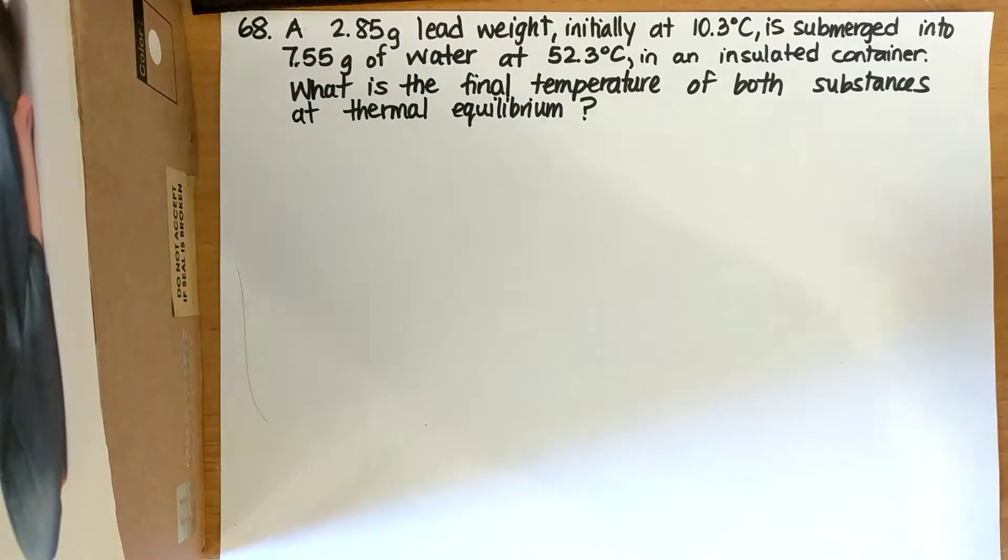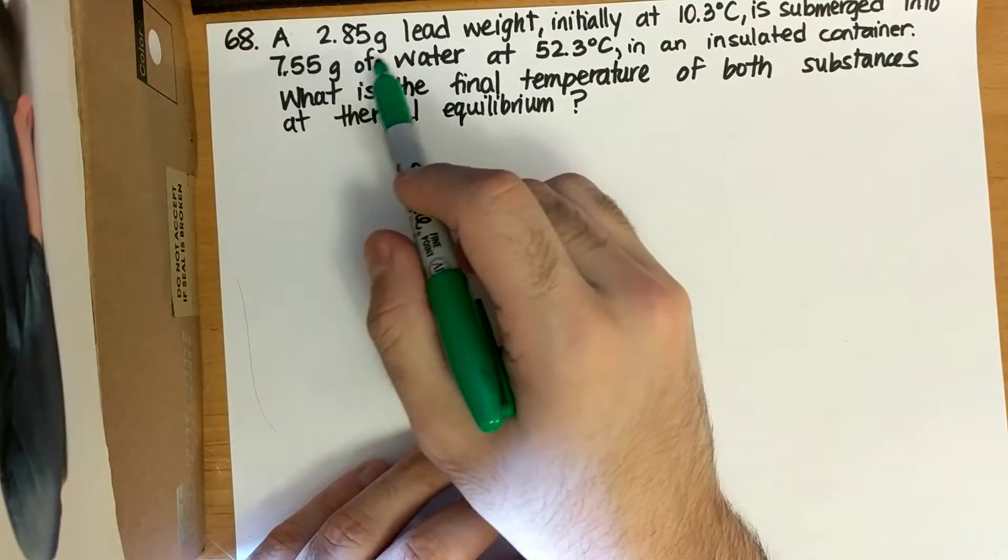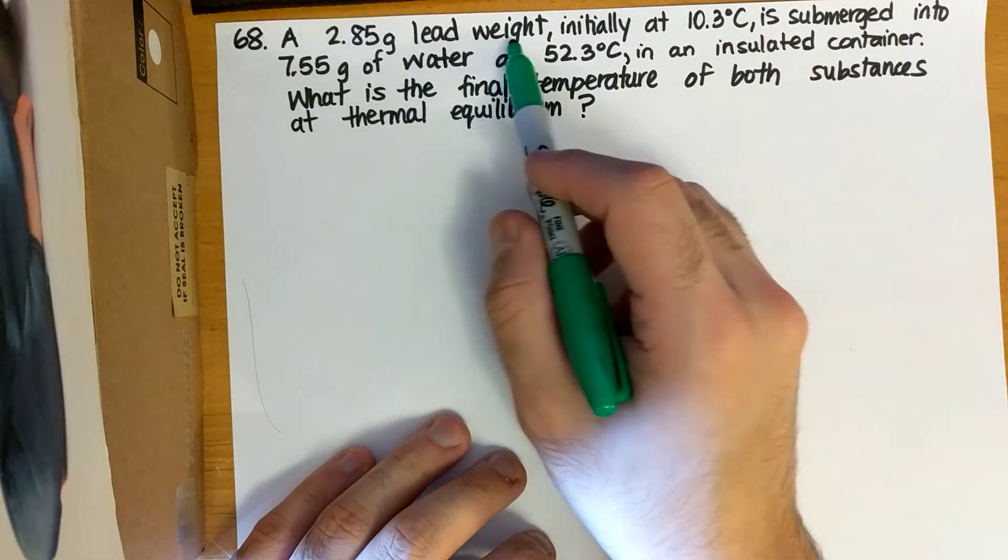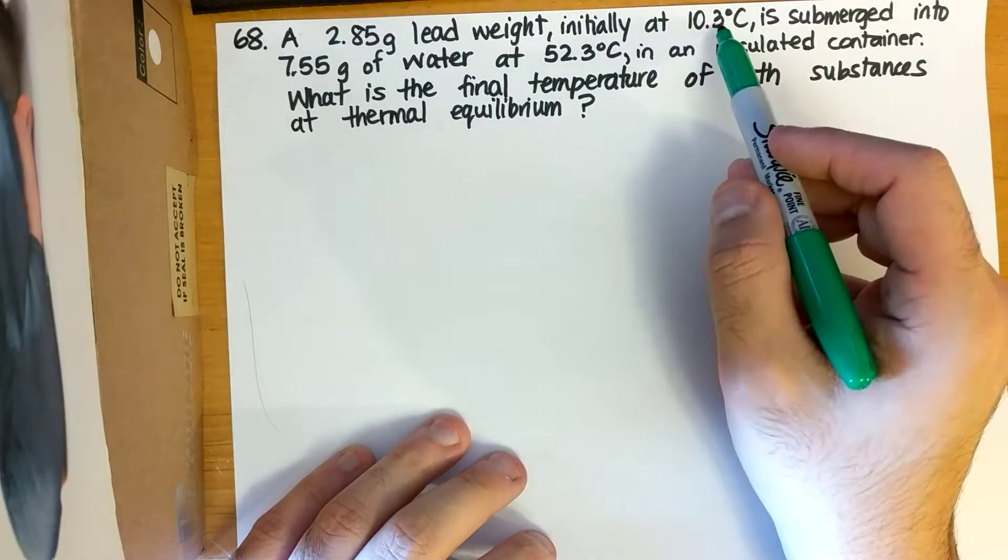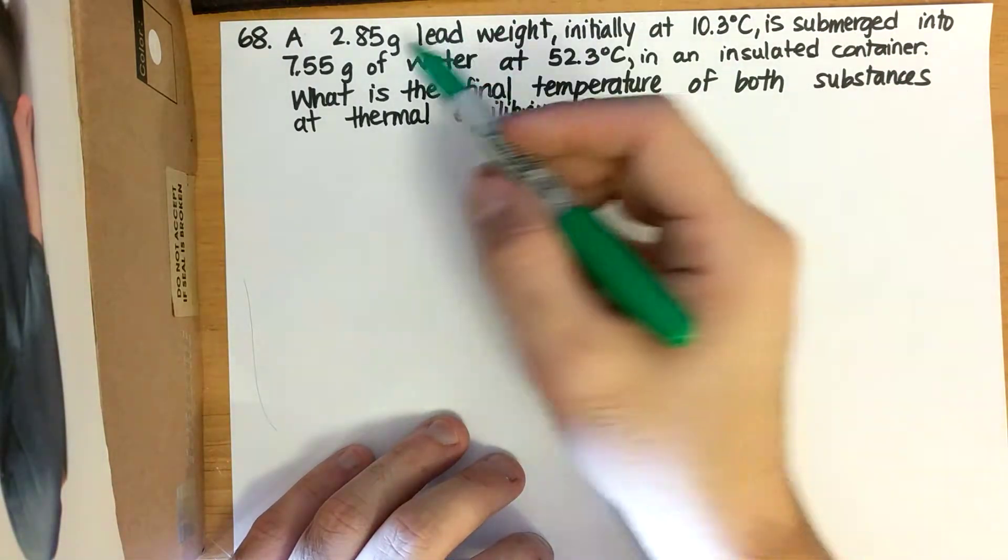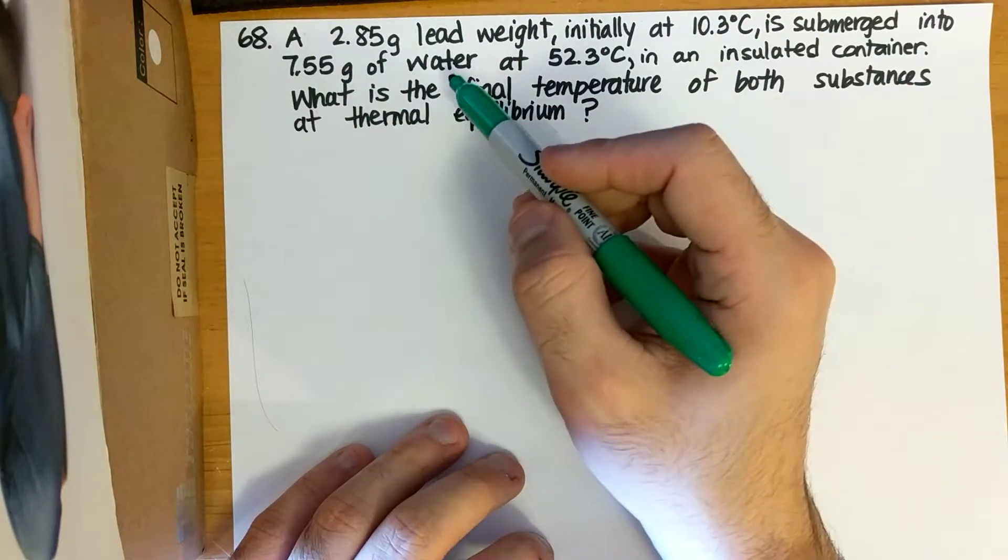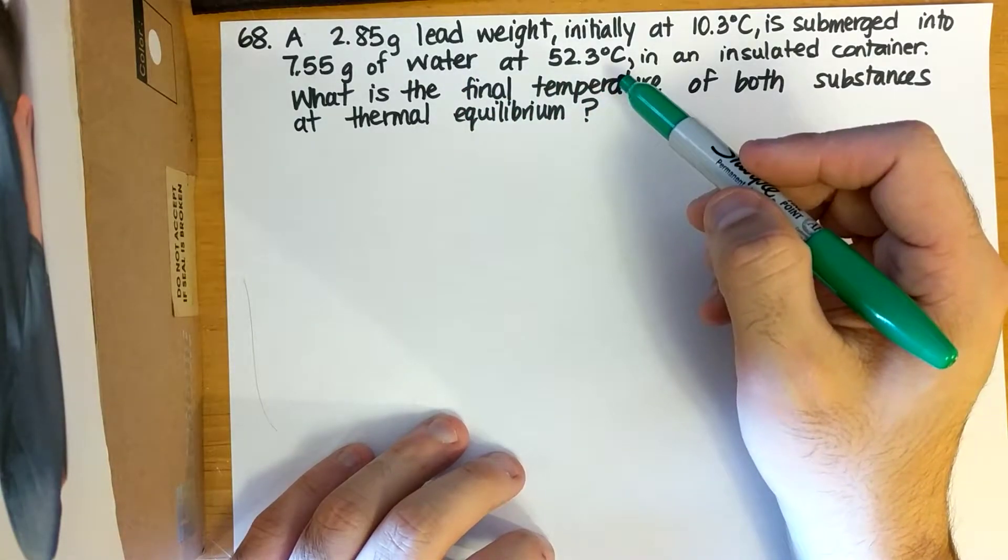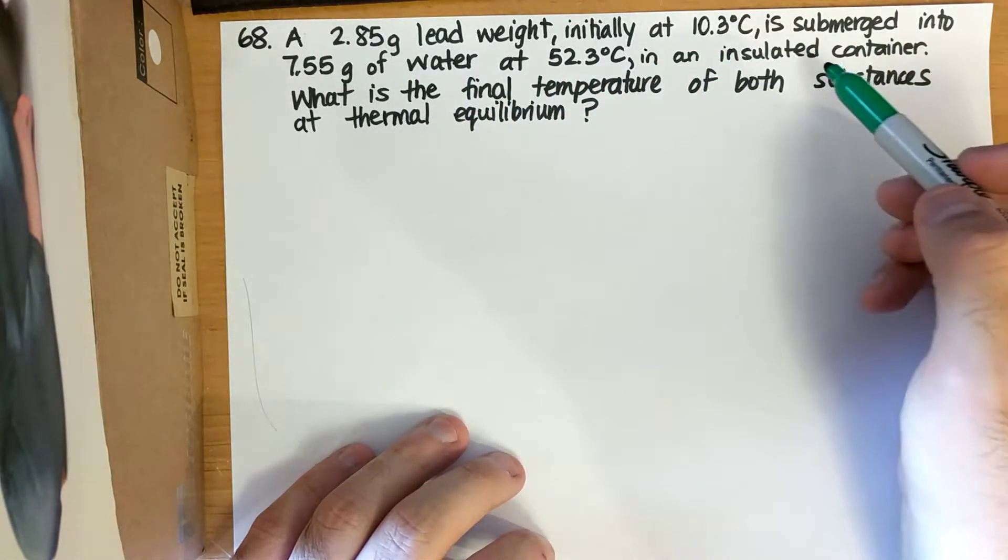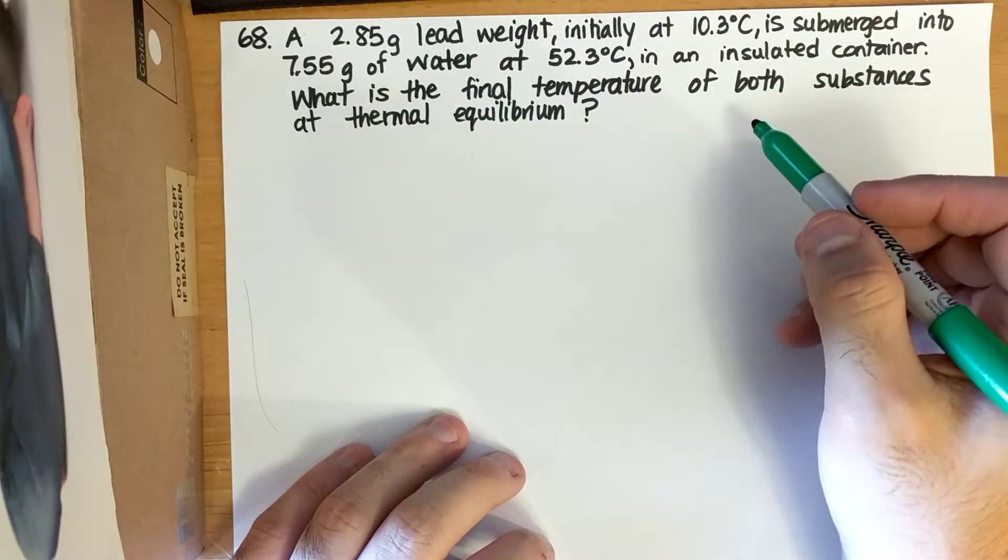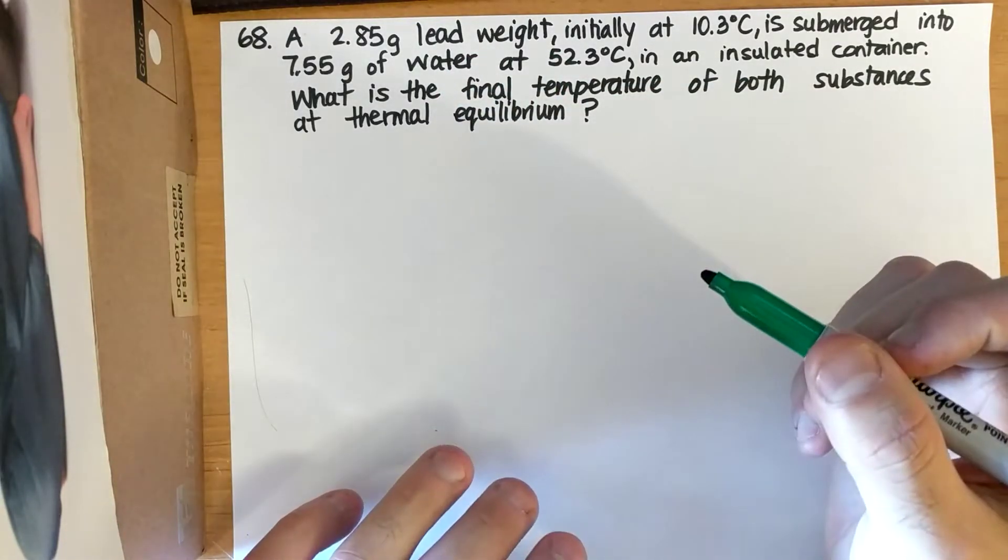So let's try and answer this together. So it says, a 2.85 gram lead weight, initially at 10.3 degrees Celsius, is submerged into 7.55 grams of water at 52.3 degrees Celsius in an insulated container. What is the final temperature of both substances at thermal equilibrium?